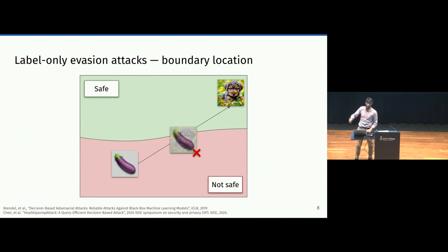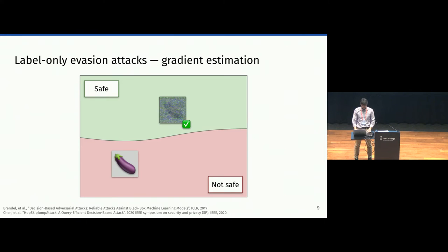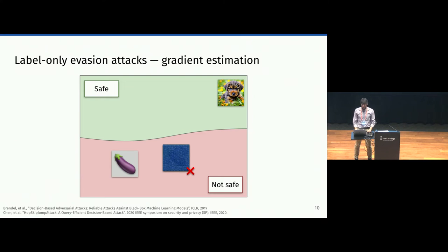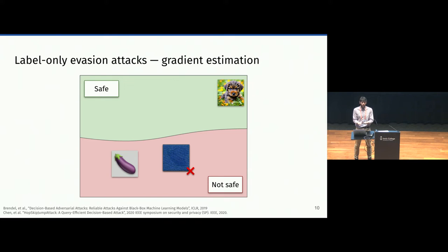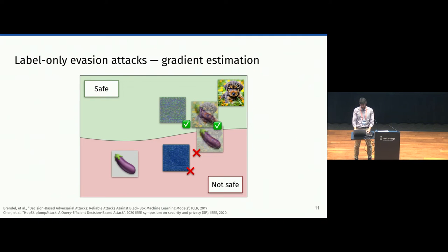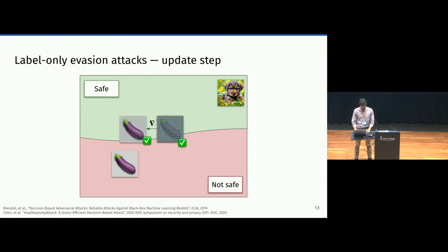They follow the direction until an image is classified as not safe. One thing to note is that sometimes these images are very noisy, so they don't necessarily look either safe or unsafe to the human eye. This image could be classified as safe, or this image could be classified as not safe, but neither of them are clearly one or the other. What's important here is that it's not necessary to know what the ground truth is — Facebook is not trying to detect that it's being attacked. What they care about is that users don't upload unsafe images. These attacks do several queries and use them to get some form of gradient estimation, moving along the gradient until they get an example with a small enough perturbation that the actual image is still visible.